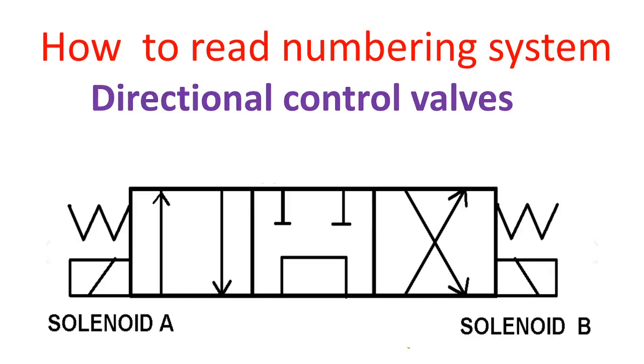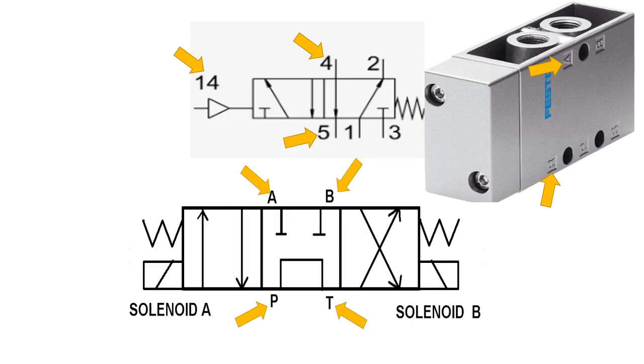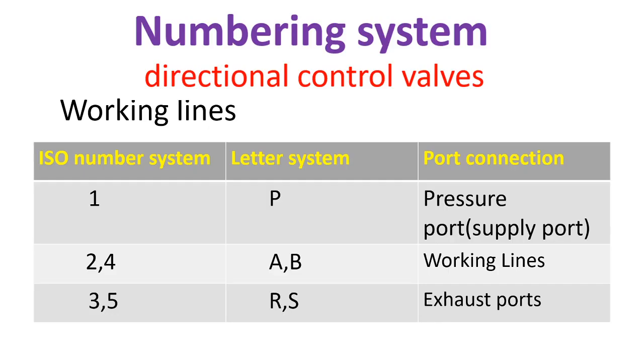Our next topic is how to read the numbering system of directional control valves. If your directional control valve uses numbers or letters for their port directions, here's the equivalent for the numbers and letters. For number 1 and letter P, that is the pressure port or supply port.